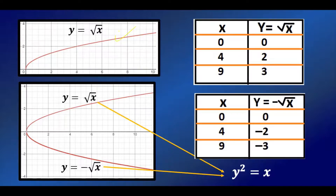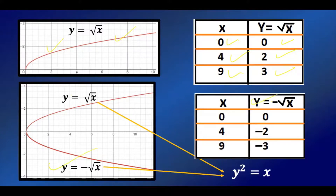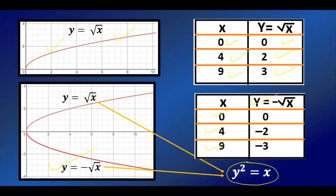Now suppose you want to draw the graph of y = √x. If x = 0, y = 0; if x = 4, y = 2; if x = 9, y = 3. You will never get a minus sign — the principal square root of x is always positive, so the graph lies entirely above the x-axis. To get the graph below the x-axis as well, define y = -√x, giving values 0, -2, -3. Combining both, y = √x and y = -√x together give y² = x, which is the parabola we already know.